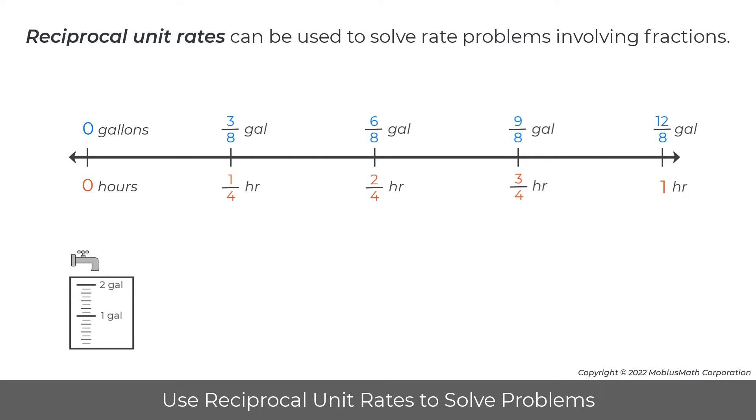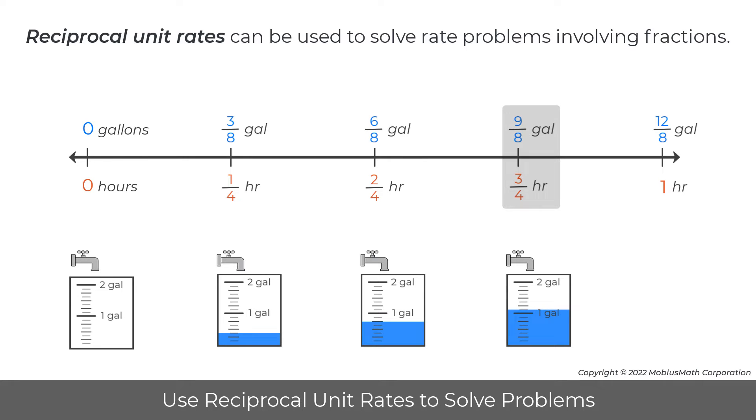Reciprocal unit rates can be used to solve rate problems involving fractions. In the previous video, the values on this double number line represent a faucet that is leaking at a rate of three-eighths of a gallon of water in one-quarter of an hour.